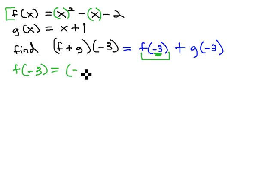Each x gets replaced with -3, so we have (-3)² - (-3) - 2. (-3)² is 9,